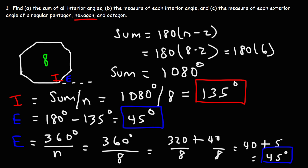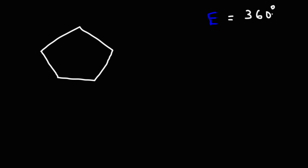Now you know how to calculate the sum of all the interior angles of a regular polygon, the measure of each interior angle, and the measure of each exterior angle. Let's go back to the regular pentagon and talk about why the measure of each exterior angle is simply 360 divided by n. 360 is the measure of a full circle, and if we divide it by the number of sides of a polygon, we get the measure of each exterior angle.